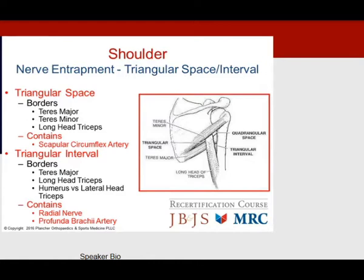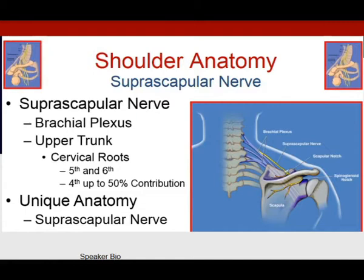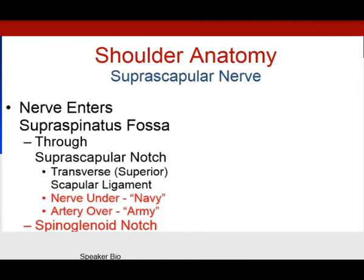The triangular space contains the scapular circumflex artery, while the triangular interval contains the radial nerve and profunda brachii. The suprascapular nerve comes from the upper trunk, innervated by C5 and C6 nerve roots, and is a mixed nerve with motor and sensory fibers. It enters the supraspinatus fossa through the transverse scapular notch, diving under the transverse scapular ligament — nerve under, artery above. It travels toward the glenohumeral joint then dives medially to innervate the infraspinatus, so isolated infraspinatus atrophy suggests compression at the spinoglenoid ligament.